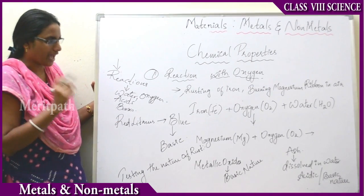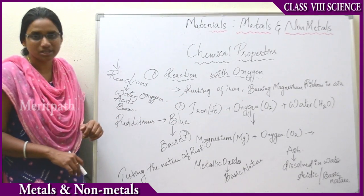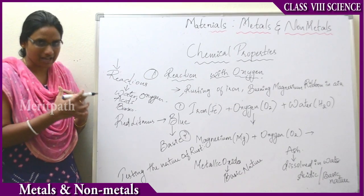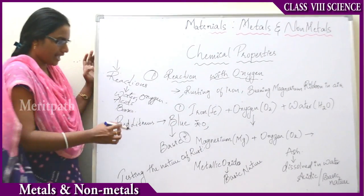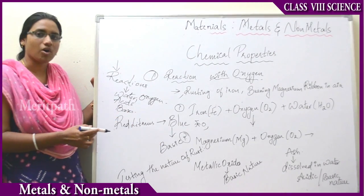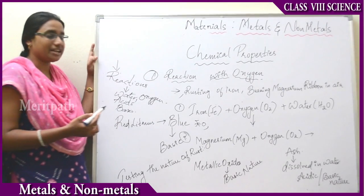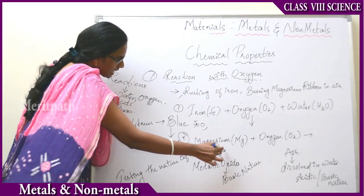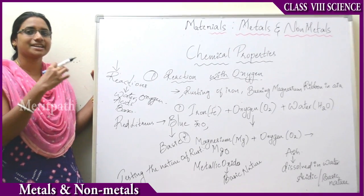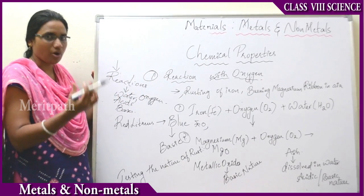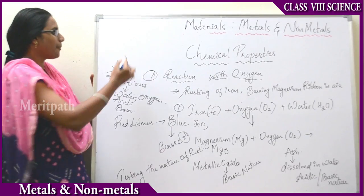Here we have seen two types of chemical equations. The first is the reaction between iron, oxygen, and water — whenever iron, oxygen, and water come together, they form iron oxides (FeO). In the second reaction, magnesium reacts with oxygen present in the atmosphere, leading to the formation of magnesium oxide (MgO). So oxides are generated. All these metals, when reacted with oxygen present in air or water, result in the formation of metal oxides.